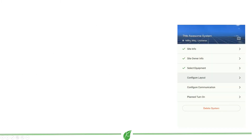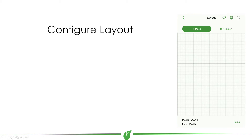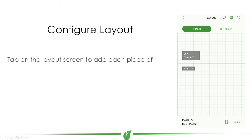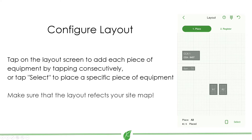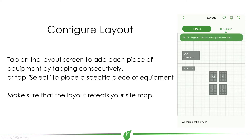Then tap on the layout screen to place CCAs, and tap select to choose the next piece of equipment to place on site. Add each piece of equipment, being sure to place modules according to their physical location on site as reflected in your site map.